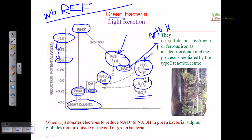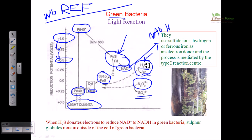They use sulfide ions, hydrogen, or ferrous ions as electron donors. The process is mediated by the type I reaction center. H2S donates electrons to reduce NAD⁺ to NADH in green bacteria. The elemental sulfur formed from the oxidation of H2S is stored in sulfur globules, which remain outside the cell of the green bacteria. So if we look at this green bacteria, we can find the presence of sulfur globules on the outside of the cell. That is all about the light reactions of green bacteria.